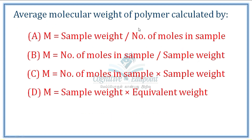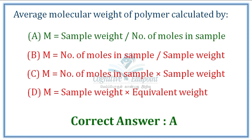Next question on average molecular weight of a polymer. This is a tricky question — it could be number average, weight average, or another type. Molecular weight equals sample weight divided by number of moles. The most widely used are number average molecular weight and weight average molecular weight. The answer key considers M = sample weight / number of moles as the average molecular weight of the sample.